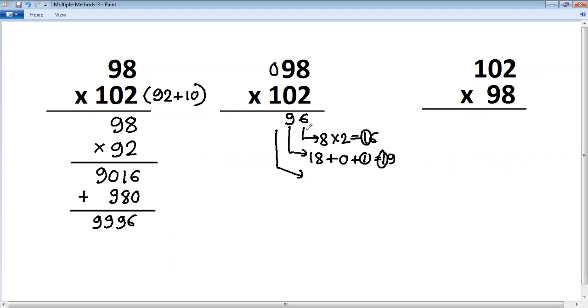Next step: 0 into 2 is 0, plus 8 into 1 is 8, plus 9 into 0 is 0, plus there is 1 carry. So 8 plus 1 is 9.